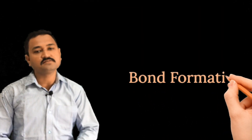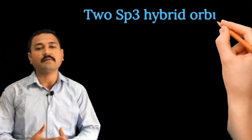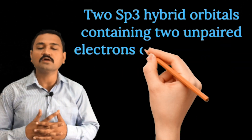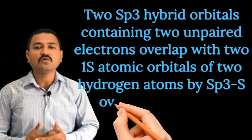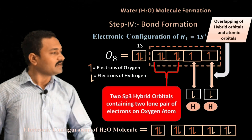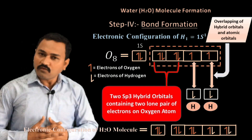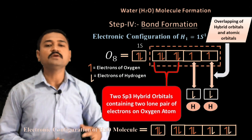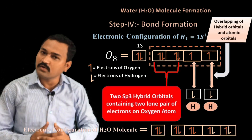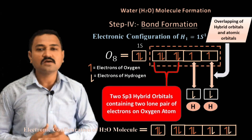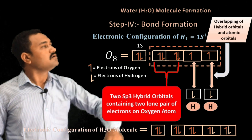In the bond formation step, two of the four sp3 hybrid orbitals containing unpaired electrons overlap with the 1s atomic orbital of two hydrogen atoms by sp3–s overlap, resulting in the formation of the water molecule, as shown in the diagrammatic representation. The two sp3 hybrid orbitals with unpaired electrons overlap with the 1s atomic orbital of each hydrogen atom to form the water molecule.